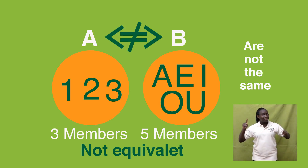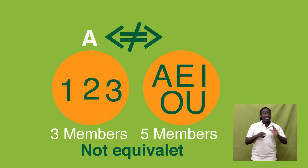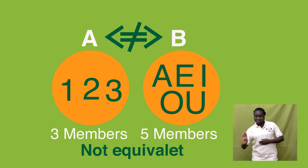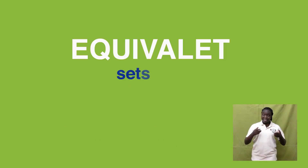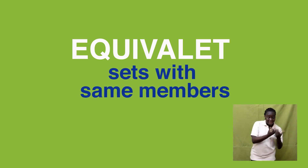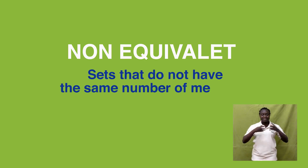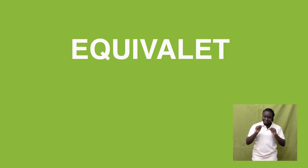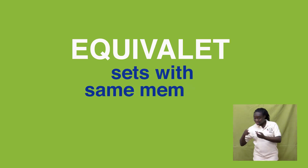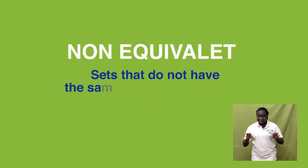So we use the symbol for non-equivalent to describe sets which are not equivalent. A is not equivalent to B. Remember: we write equivalent for sets which have the same number of members, and non-equivalent for sets that do not have the same number of members.